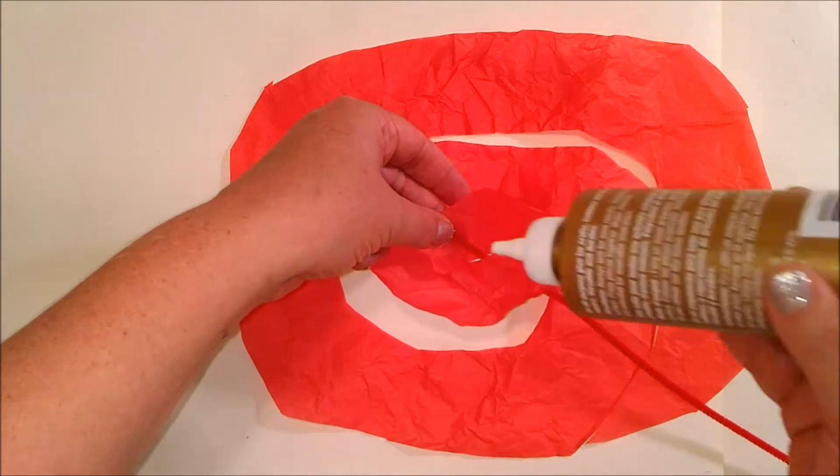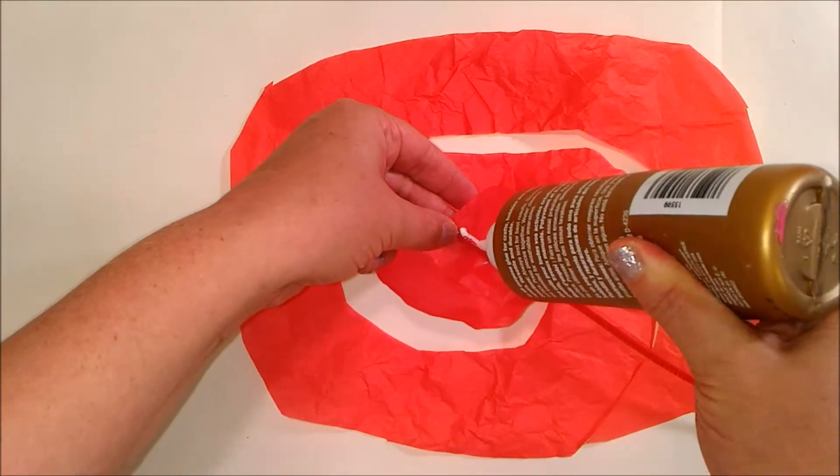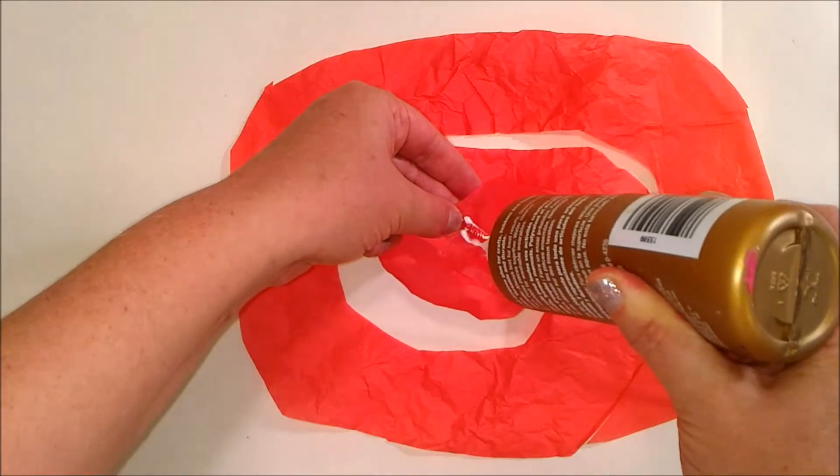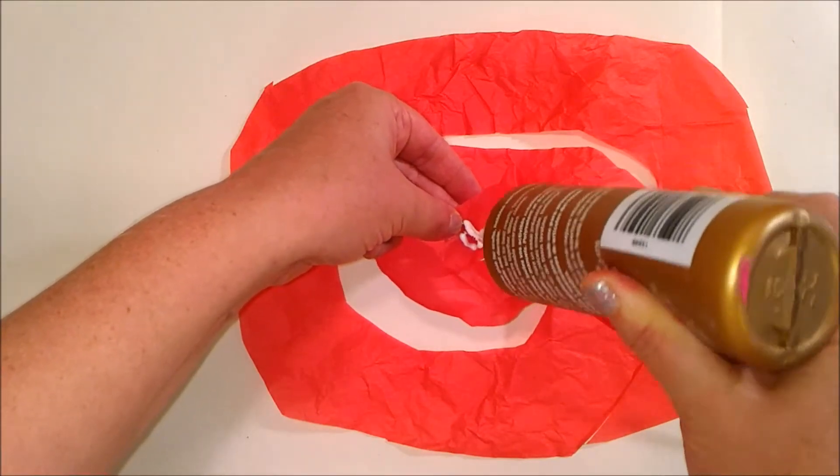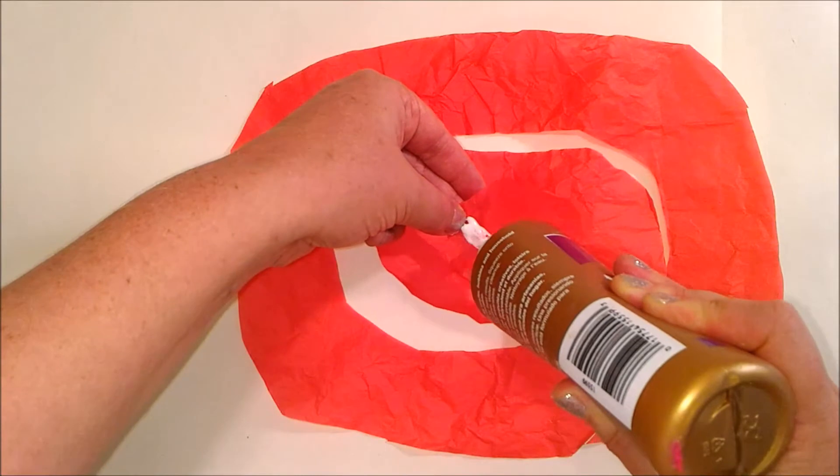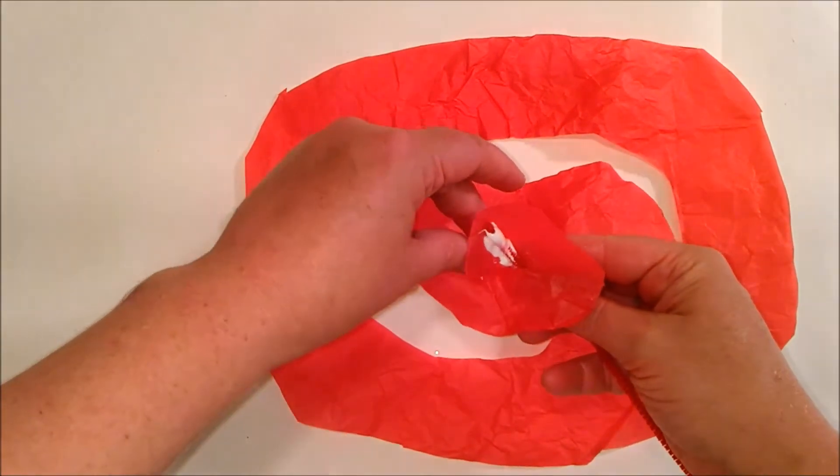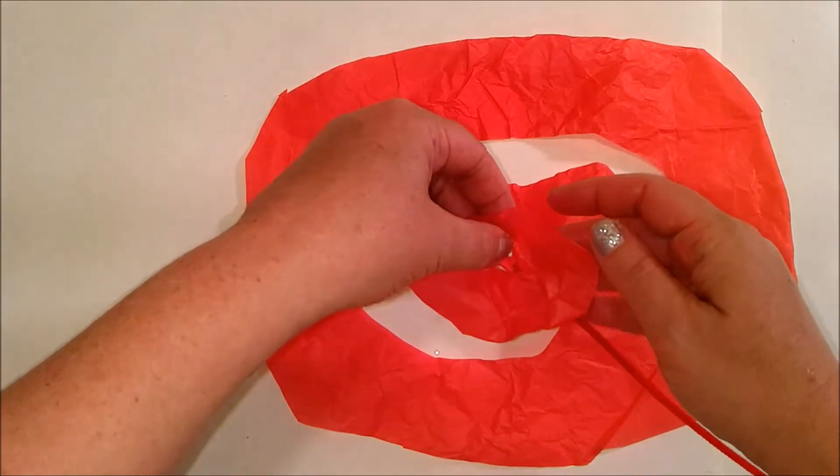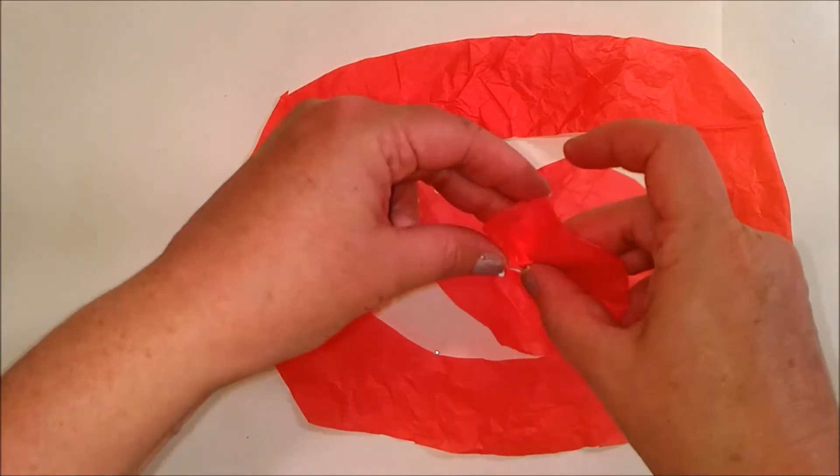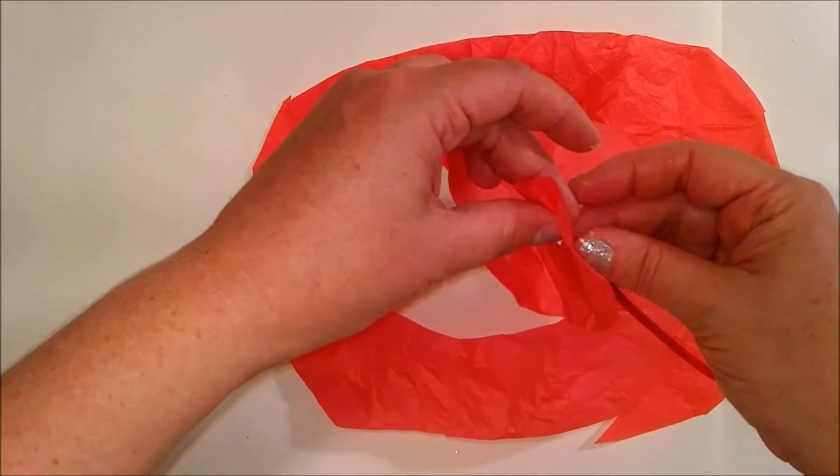Of course, you can do whatever shape you like because nature can be very amorphic. So we're putting a bead of glue here to secure it and get it going. And then we just simply roll our rose.